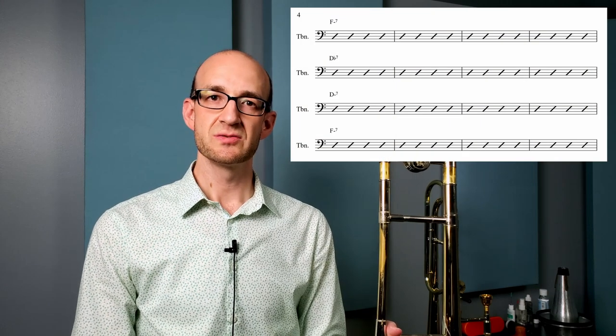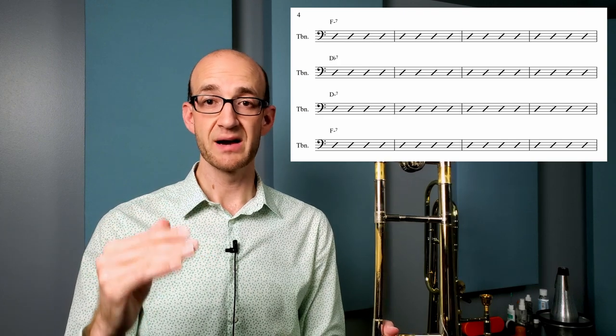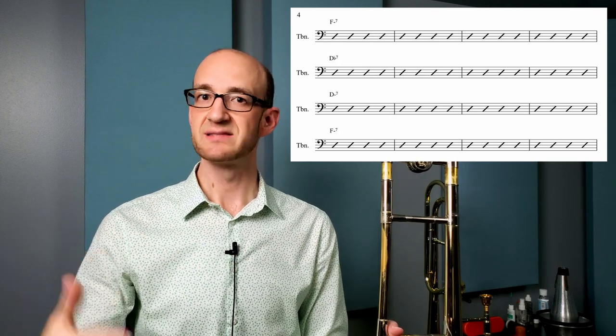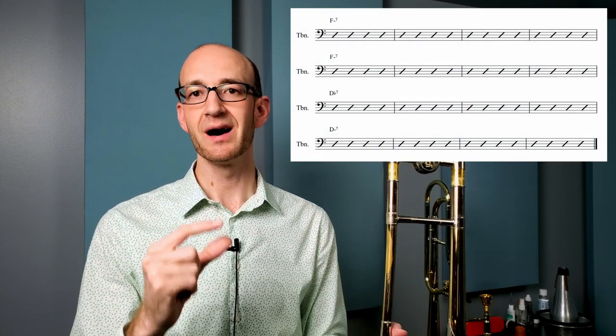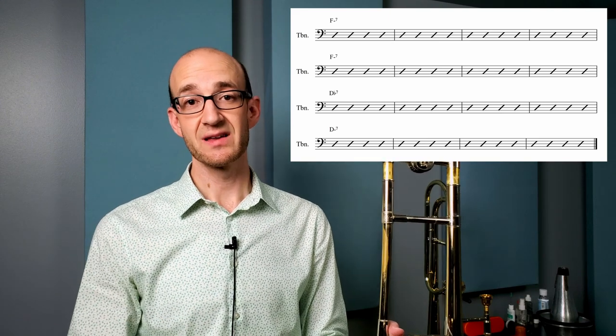Now I would caution you some play alongs of this that you could find online in my opinion are wrong on the form and I hate to just tell people they're wrong but if you listen to the original recording this tune, the solos always start on the first F minor section then it's Db, D minor, F minor again and then the solo ends after however many choruses. A lot of play alongs actually have eight bars of F minor up top and that is not how Herbie Hancock plays it, at least not on the original recording.